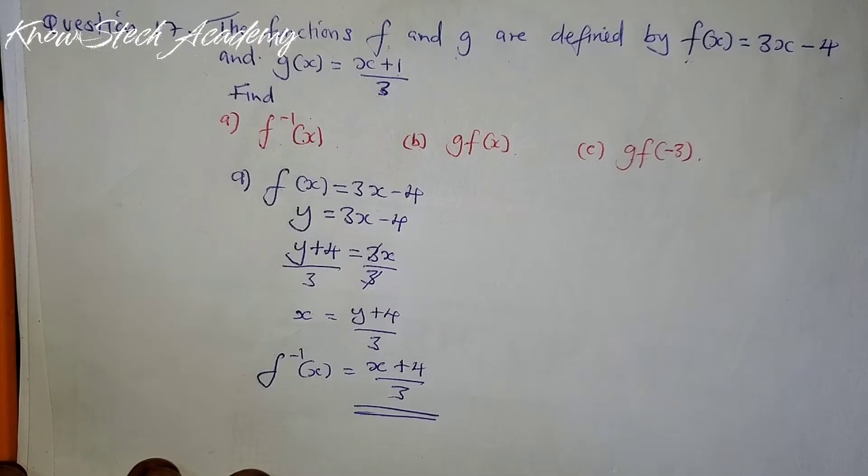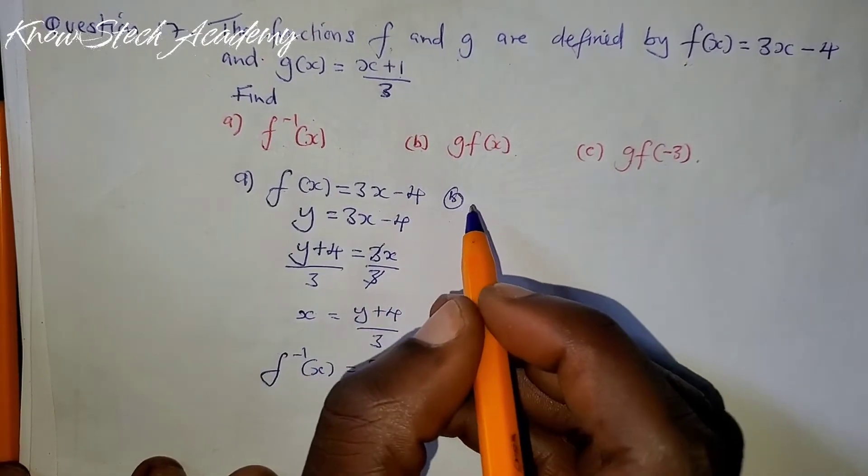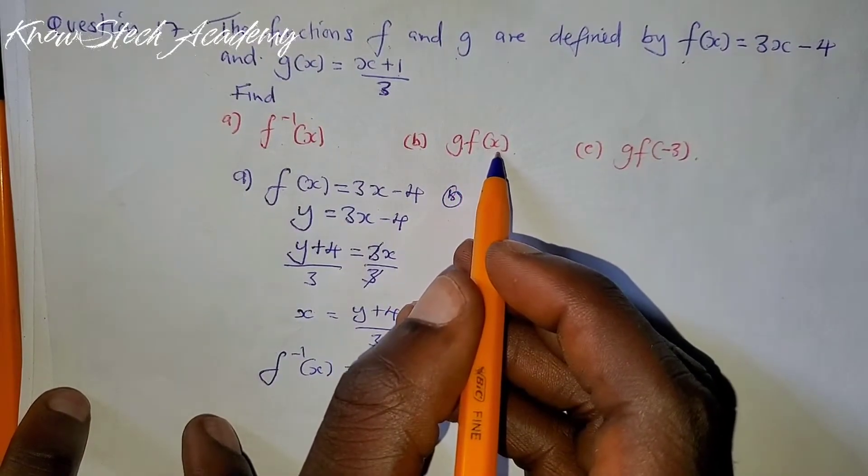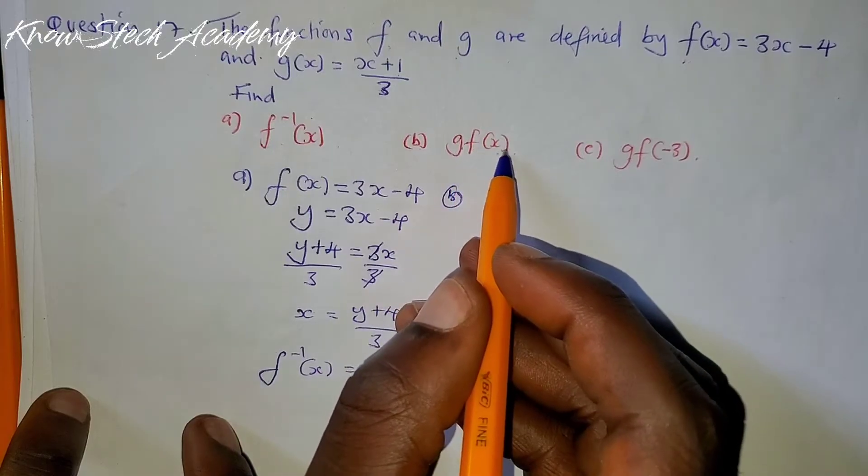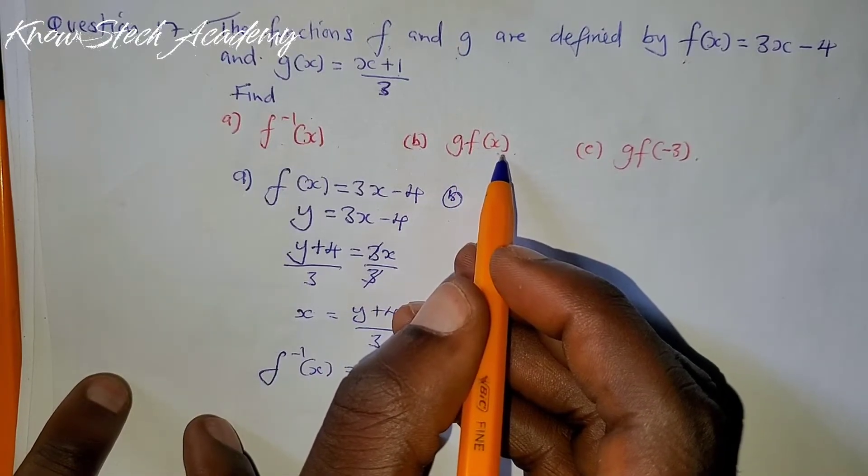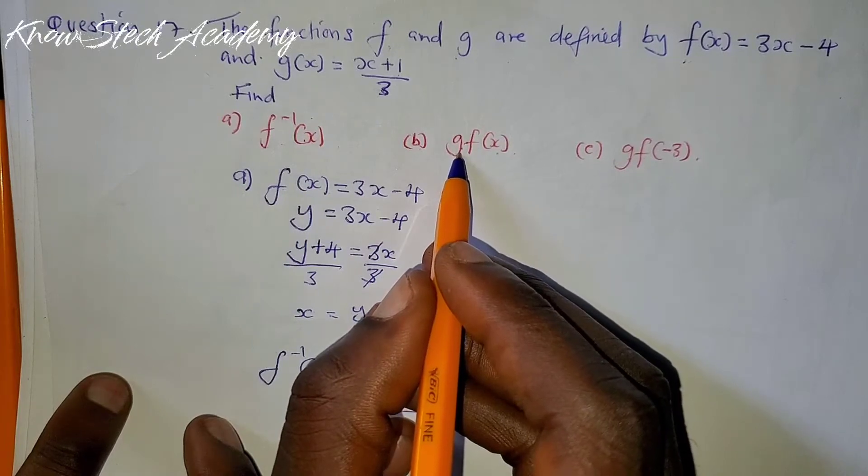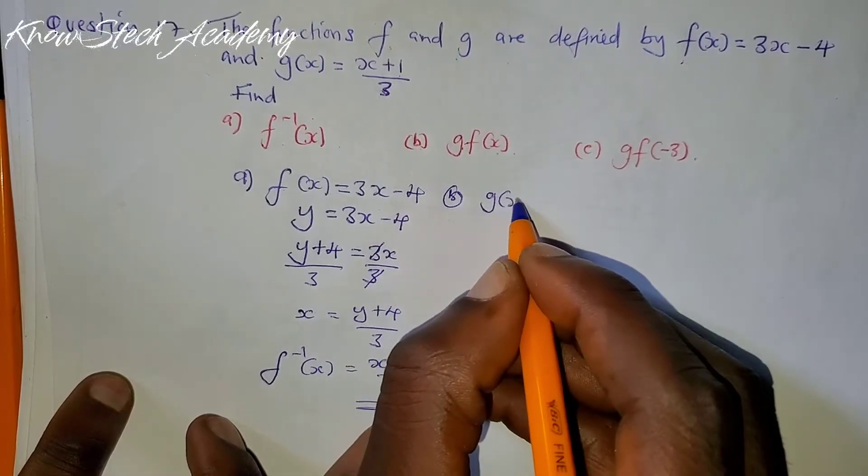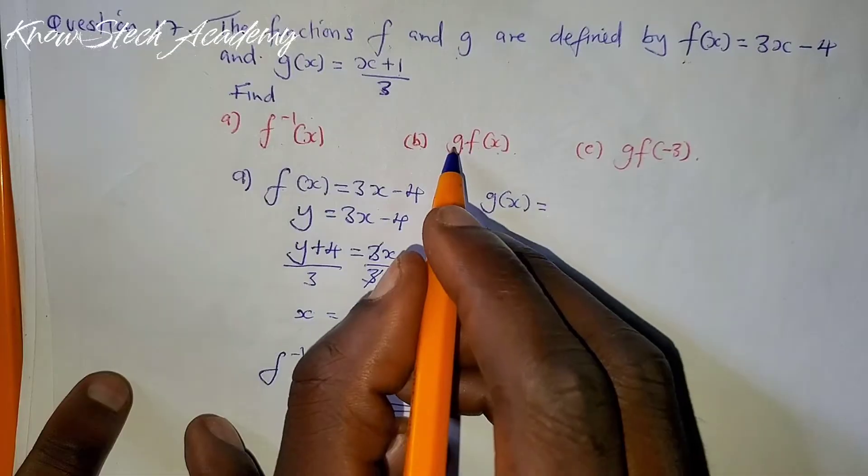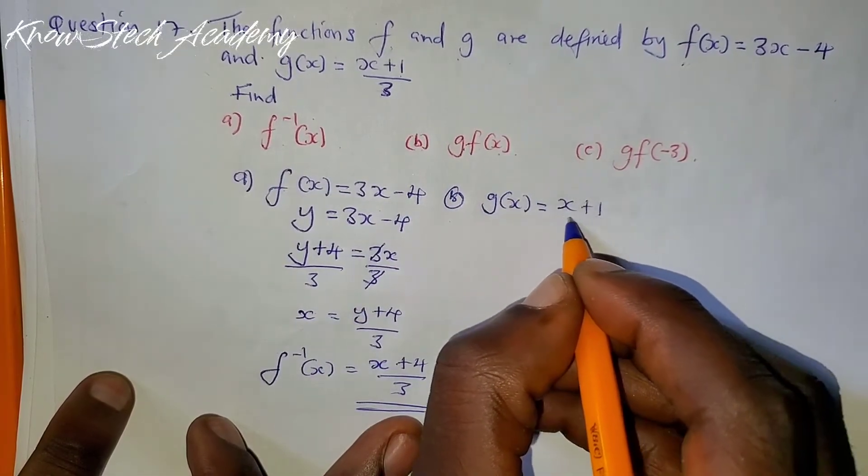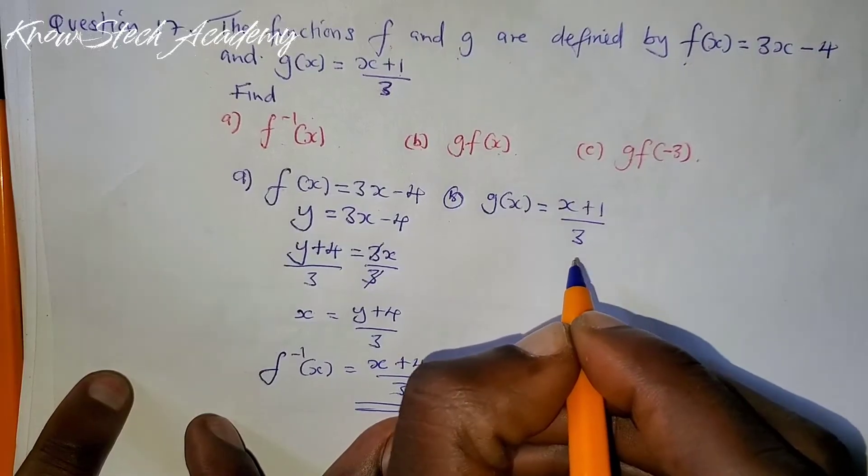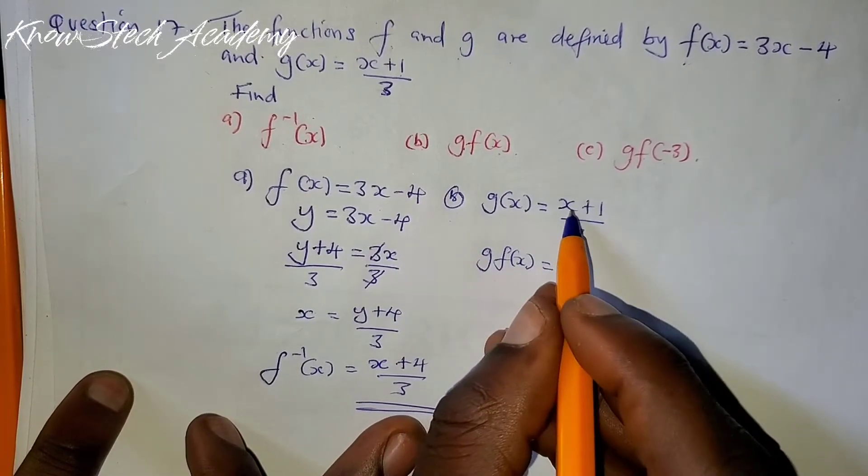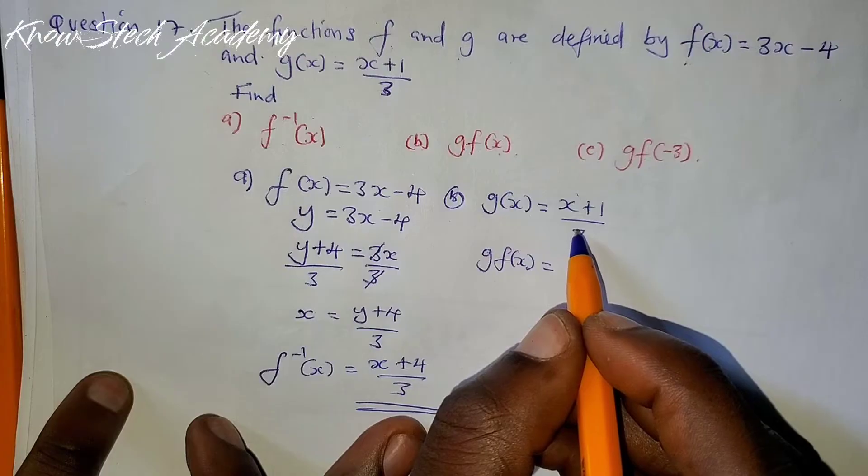Next is B. They're asking us to find gf(x). Remember, the first step is write the first function here, which is g. So we're going to say g(x), this is the one that is appearing first here, equals (x + 1)/3. Then you can write gf(x) equals, now where there is x here, substitute with the f function.